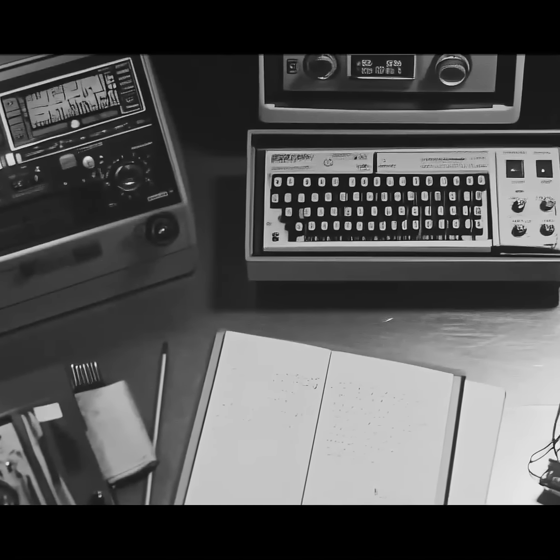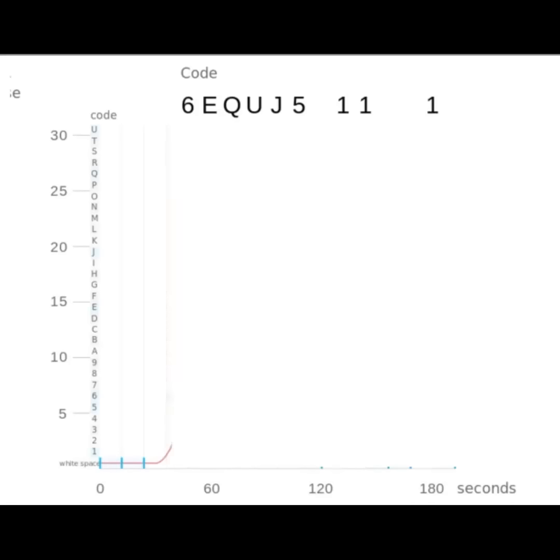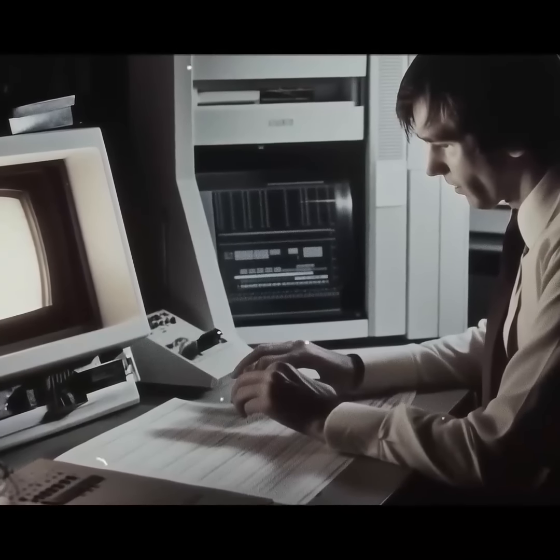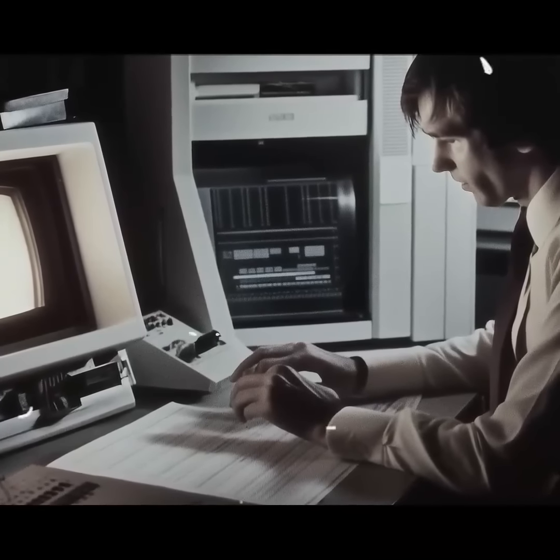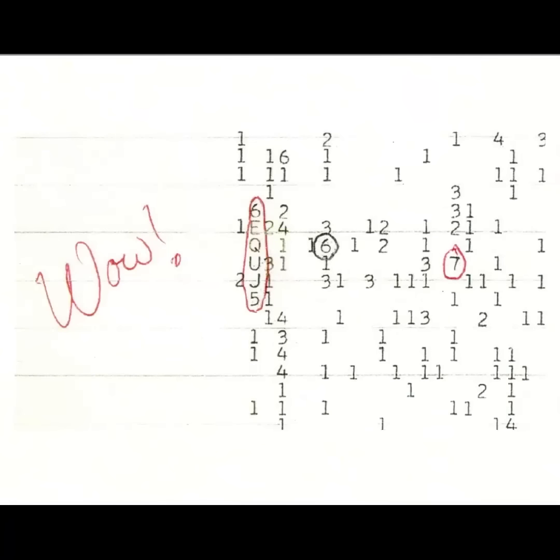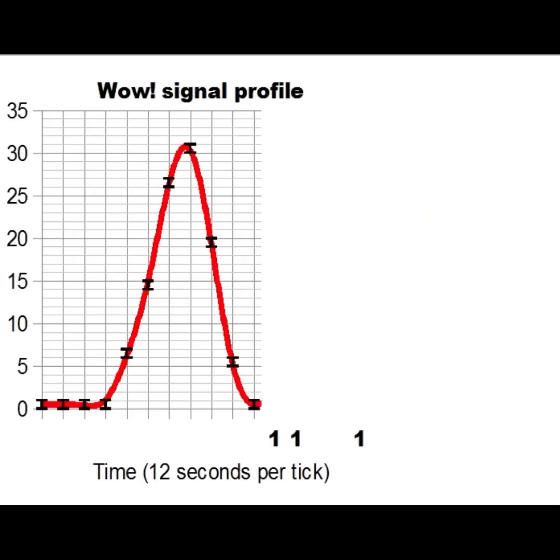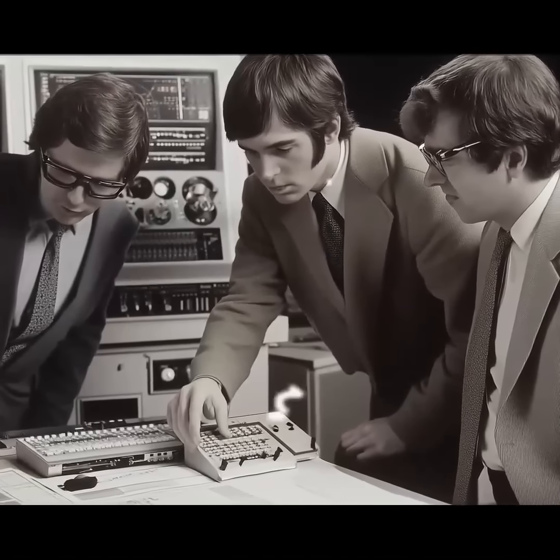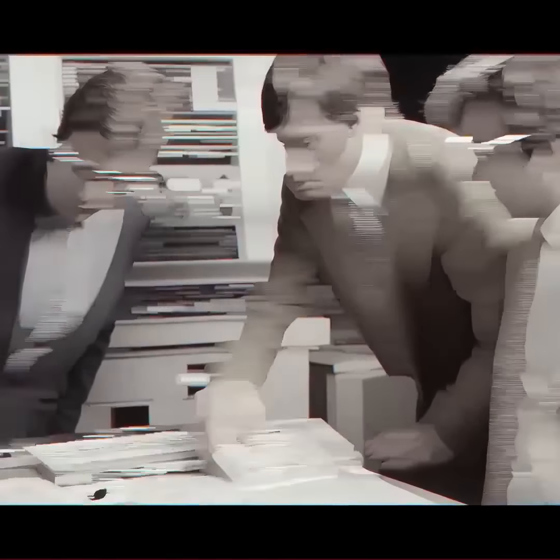The signal lasted the entire 72 seconds that Big Ear was tuned in. A few days later, astronomer Jerry R. Amen was looking over the data when he spotted the unusual signal on a computer printout. He was so surprised that he wrote WOW next to it. And that's how the signal got its famous name. The signal also has another not-so-exciting name, 6EQJ5. Some people thought it might be a hidden message, but it actually just shows how the signal's intensity changed over time.